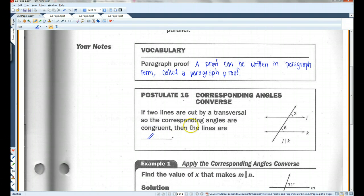So this is basically saying the opposite of what the previous postulate we learned was. In our last section, we learned that if the two lines are parallel, then the corresponding angles are congruent. The converse is also true. If the corresponding angles are congruent, then the lines are parallel.